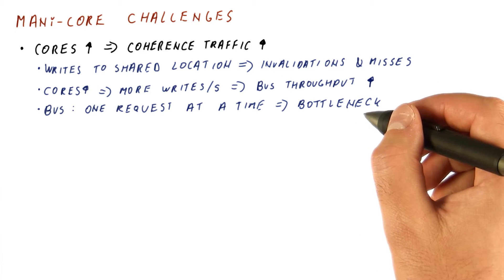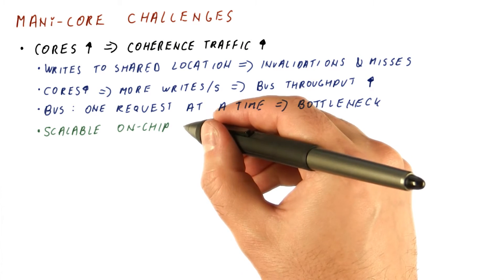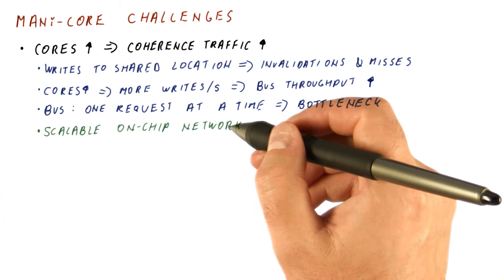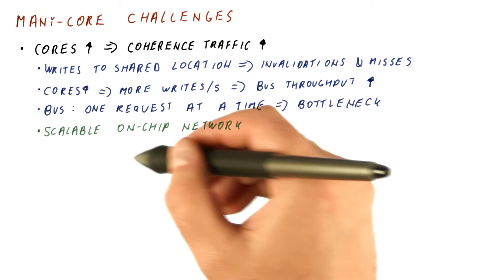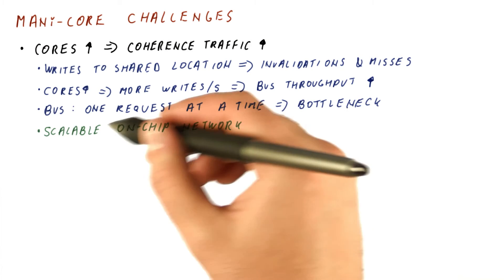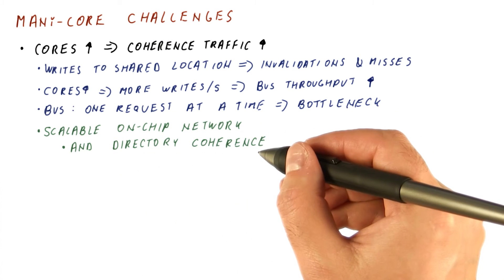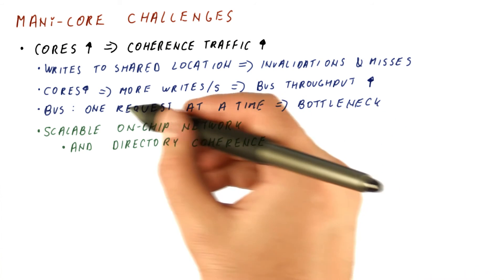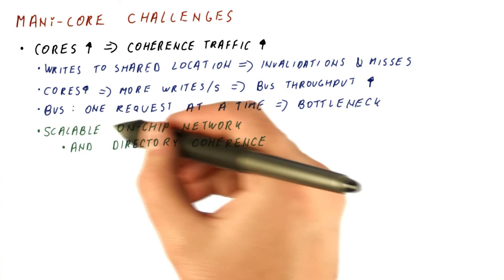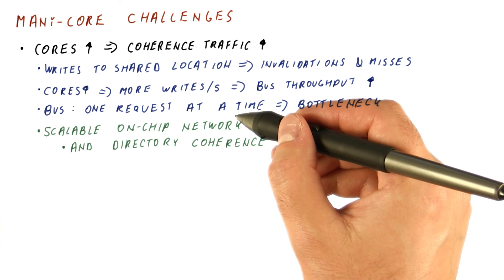So what we need is a scalable on-chip network that allows the traffic to grow as the number of cores grows. And then we also need to use directory coherence so that we don't rely on the bus to serialize everything for us.